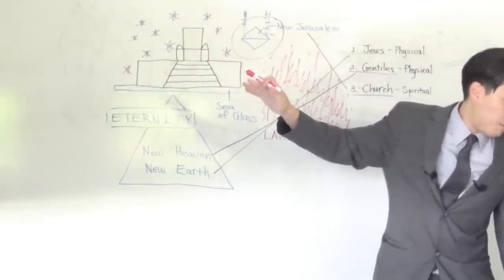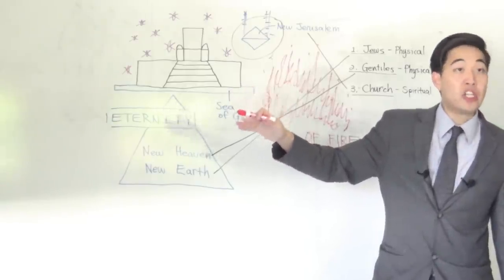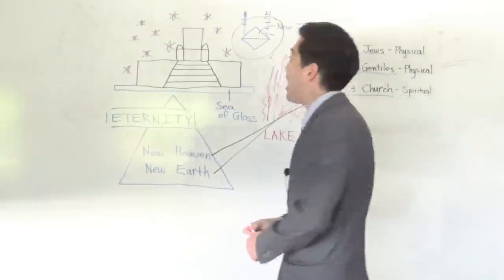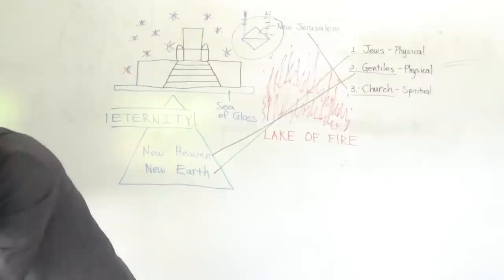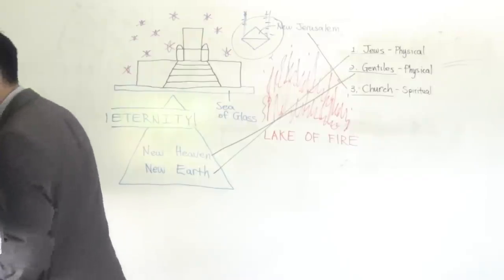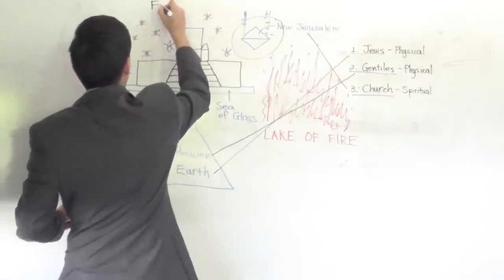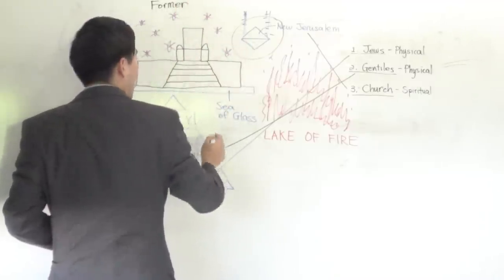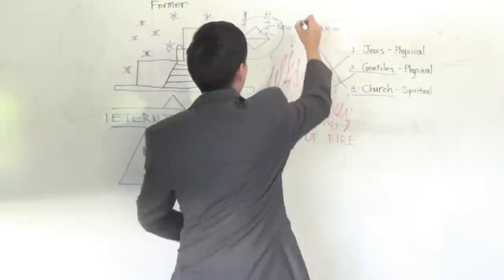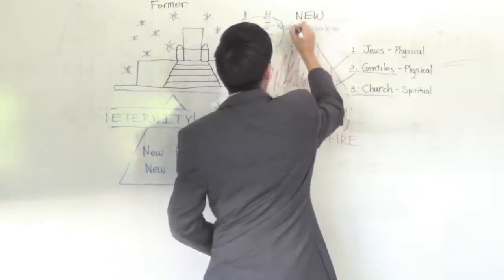Because verse 5, I make all things new. It's going to be new. Tears, death, pain, all of that is considered what category? Former. So if all these things are former, literally it means it's gone. And then God says all of this right here is new. Everything is new.